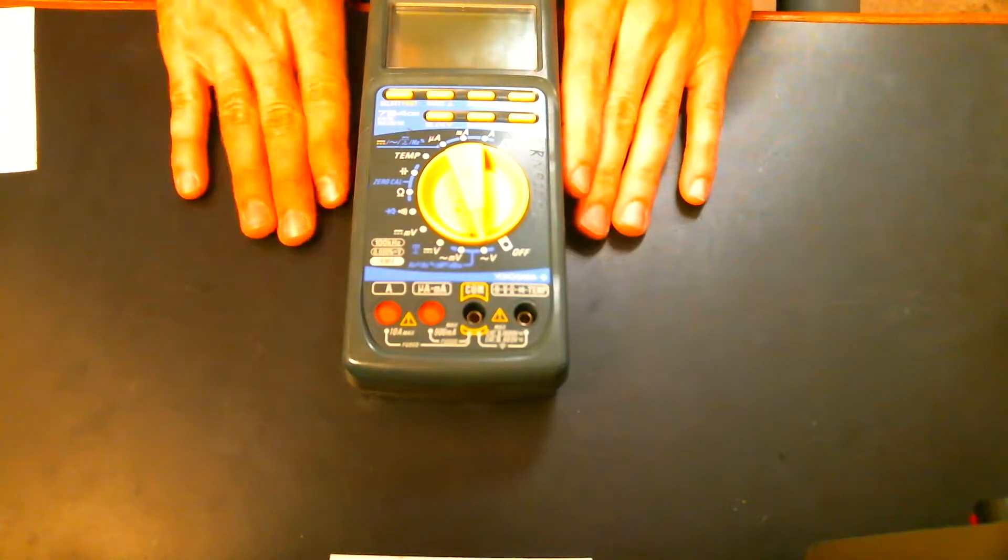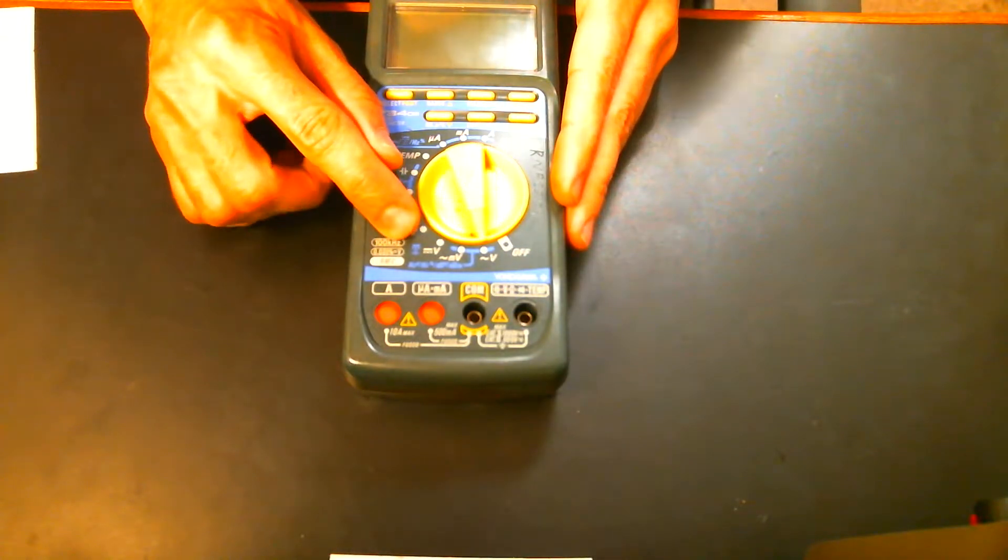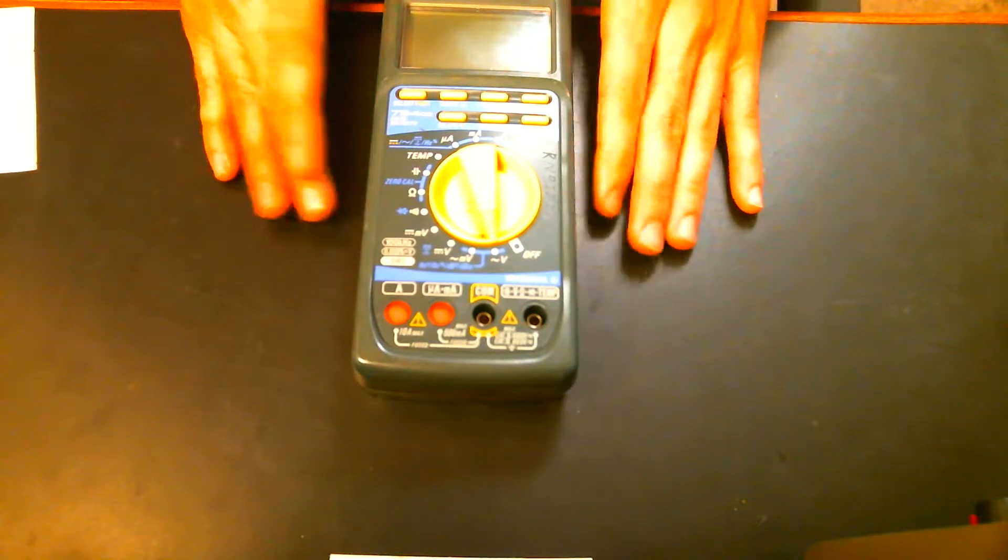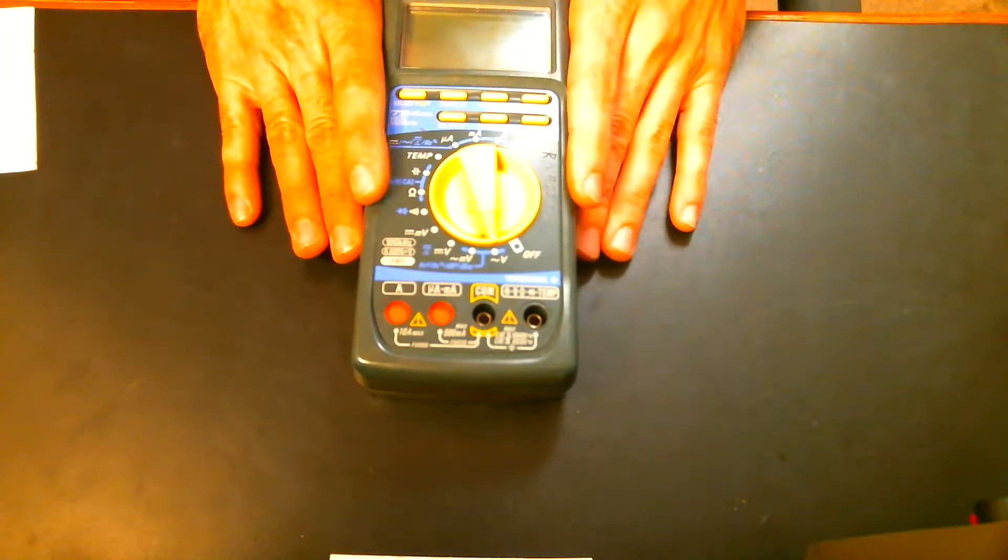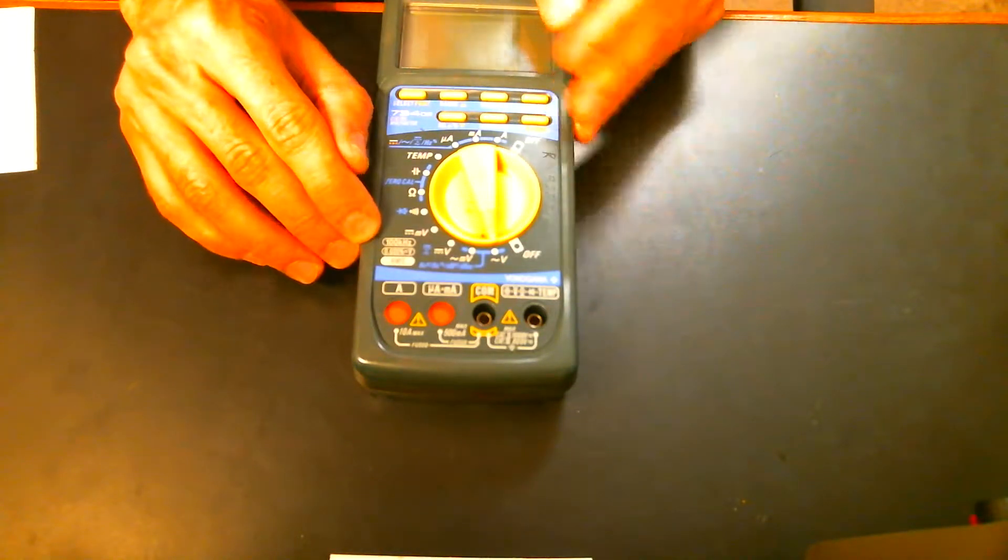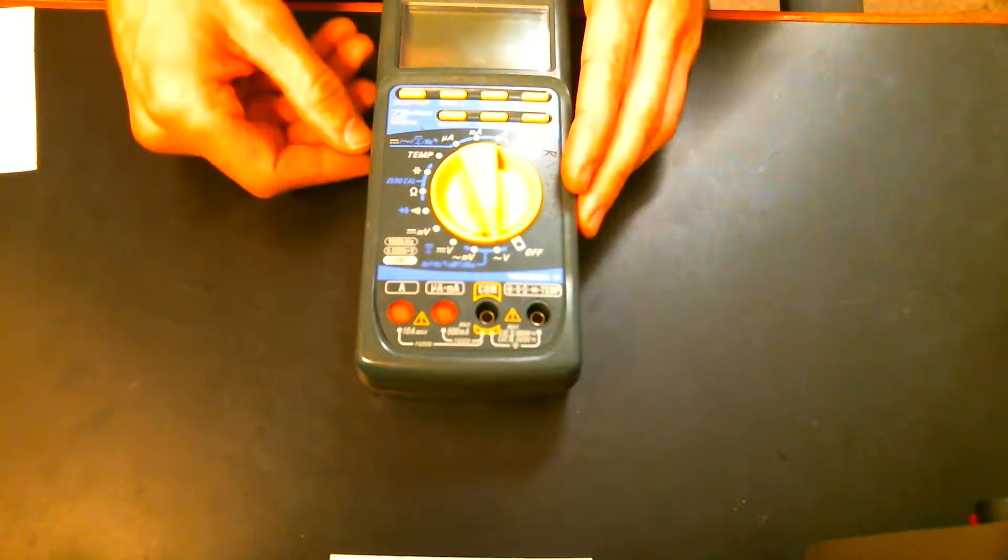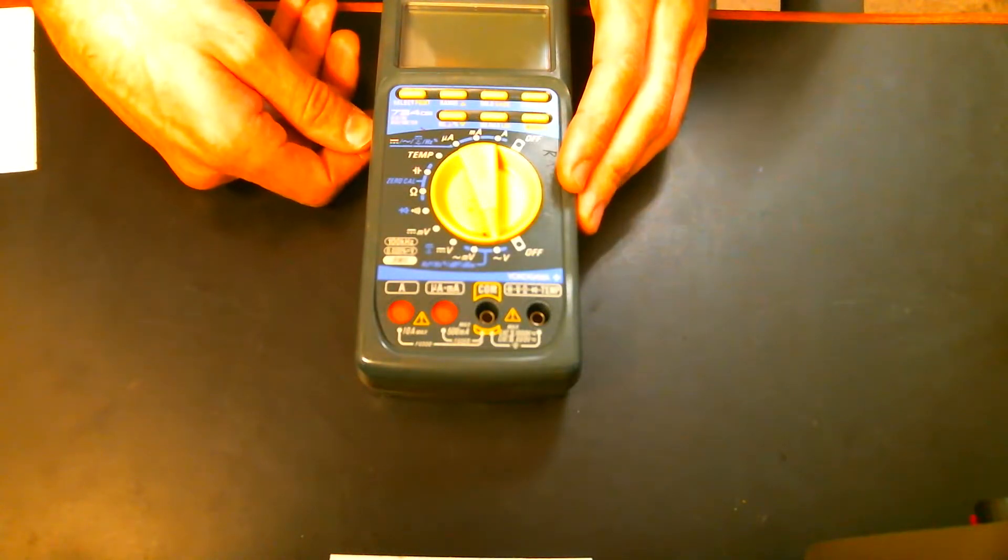It's also stated to be very accurate for a handheld meter, 0.02% on DC voltage. I know there's more accurate ones out there, but for the age of this thing, it seems like it's a very accurate meter. It can also read 100 kilohertz. That's fairly high, I believe. I don't remember what the Fluke 87 specs are.